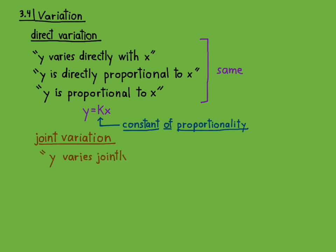Y varies jointly with X and Z. You just have two or more variables that Y varies with. You could also write this Y varies directly with X and Z. You could use the word jointly, or you could still use the word directly.